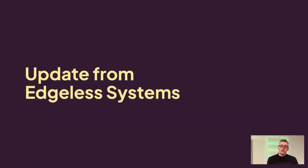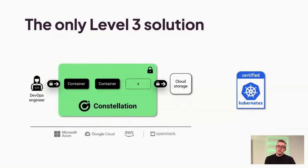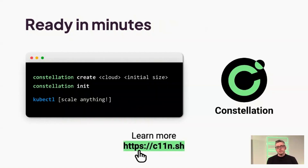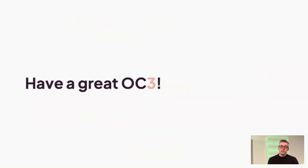A quick update from Azure Systems: last year at this point, I announced the availability of Constellation. I'm pleased to share that in September last year, we made Constellation open source. Constellation is the first level-three solution — an end-to-end, always-encrypted Kubernetes that scales up and down and behaves like normal Kubernetes, and is super easy to set up. If you want to learn more or try it out, it's open source — just go to c11n.sh, which is short for Constellation. You'll find documentation, demos, and everything you need. With that, I'd like to wish you a great OC3. Thank you all for attending — have fun!